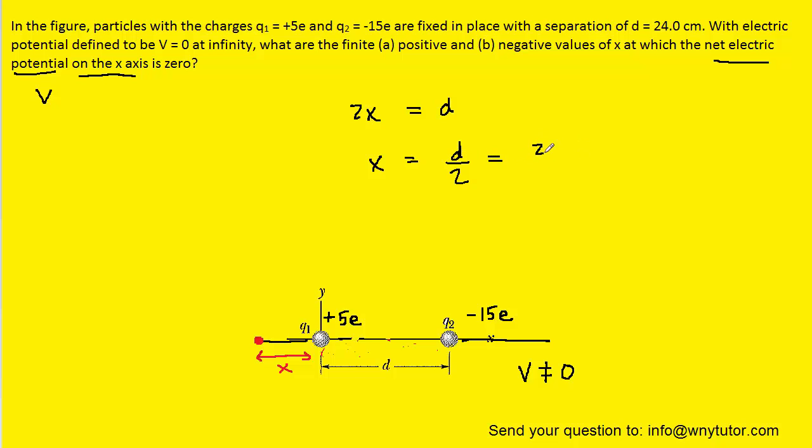We'll plug in the value for d and we can see in this case that we get 12 centimeters. Just be a little bit careful here because charge 1 is situated at the origin. The distance that we marked x is to the left of the origin. That actually means that that x coordinate technically is going to be negative 12 centimeters. So just be a little bit careful about the sign and you should have the correct answer for part B.